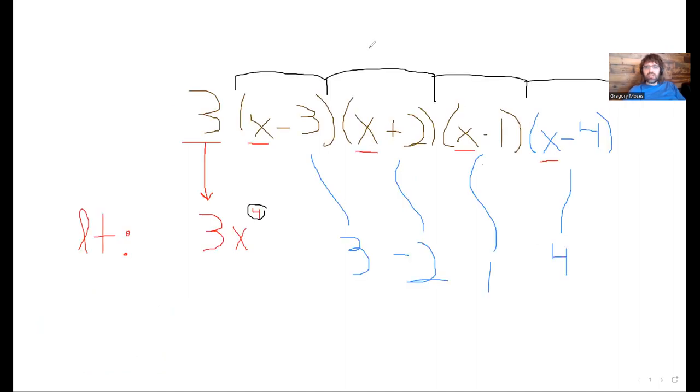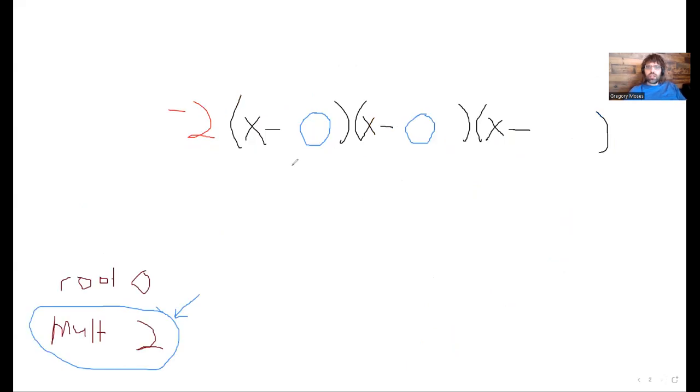And again, going back to here, what if I change this so that instead of x plus 2, we had x minus 1. Well, now you see this 1. We're getting this root 1 twice. We're getting it from here. And we're getting it from here. So in this example, this 1 has a multiplicity of 2.